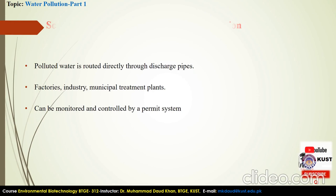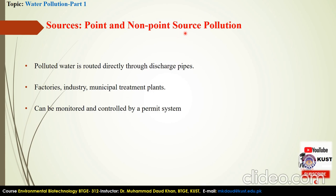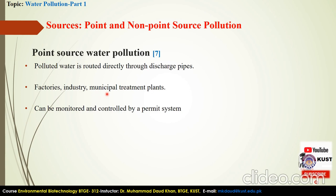We have basically two sources regarding water pollution: point source and non-point source. Point source pollution is that source of pollution which is directly discharged through different pipes. The polluted water is coming from different factories, treatment plants, industries, and other activities and is directed through different pipes and systems to main streams, particularly oceans, rivers, and canals. Luckily, we can easily monitor and control this type of pollution through different regulatory systems.